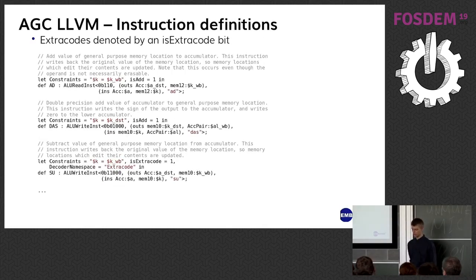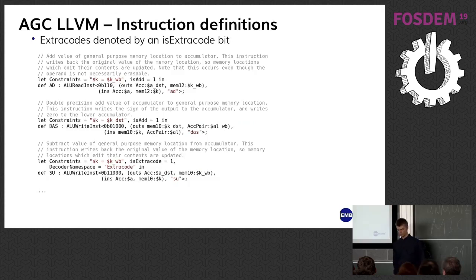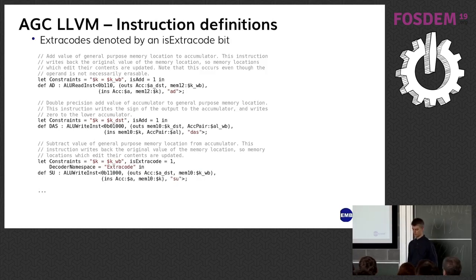Instruction definitions are relatively simple to specify according to the specifications, but it's worth noting the addition of extra codes. The AGC designers figured out a way to double the effective encoding space of their architecture by interpreting instructions completely differently if they're prefixed with an extended instruction. I used the isExtraCode bit to mark instructions which are extra codes, and another decoder namespace was necessary due to the shared encoding.